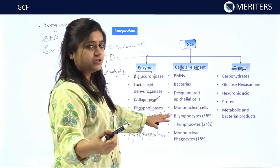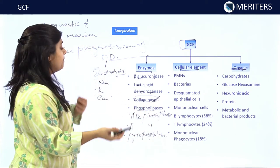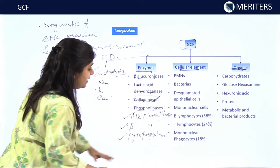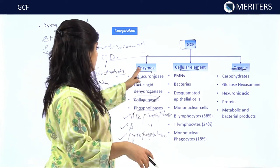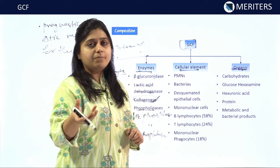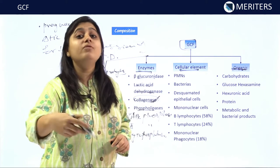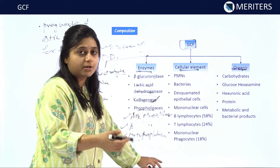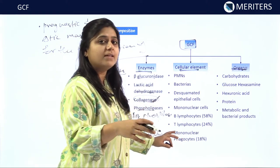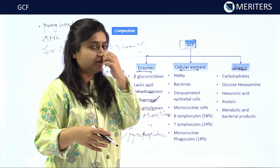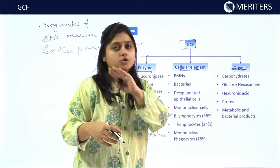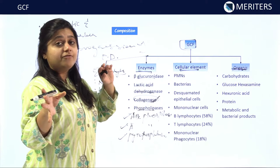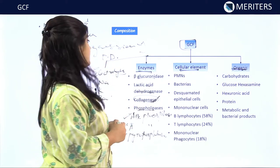Similarly, if increased levels of alkaline phosphatase, acid phosphatase, and pyrophosphatase are seen in the GCF sample, it indicates active bone resorption, as these enzymes are responsible for bone resorption. If they are not found in the GCF, we can conclude that the periodontal disease has stopped. Enzymes thus act as very important markers of periodontal disease.